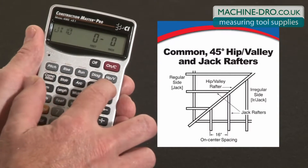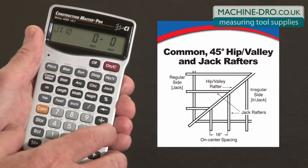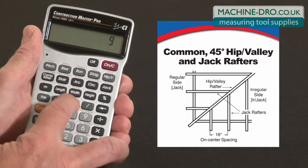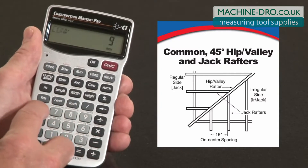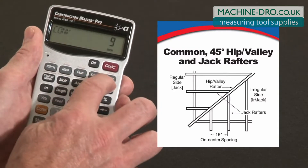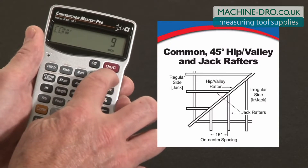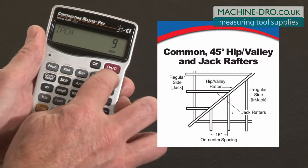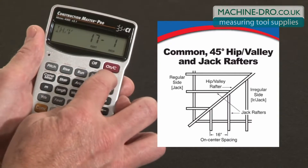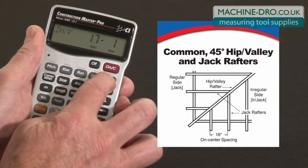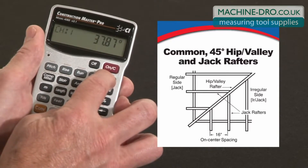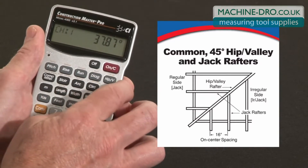Now let's say that we have a dual pitch roof, and the second pitch is a nine-inch pitch. I hit convert, and over the hip and valley key it says irregular pitch, so I enter it that way. Now I can hit the hip and valley key, and it'll give me the irregular hip and valley length — that would be seventeen foot one. It'll give me the cut angles. Of course it's not going to be forty-five degrees; the cheek cut is thirty-seven point eight seven degrees.